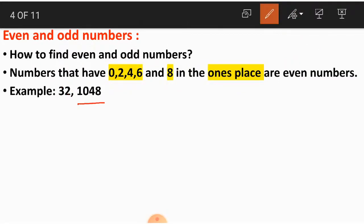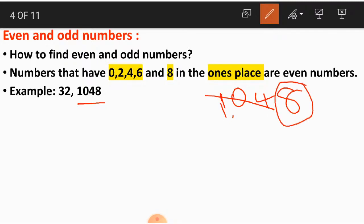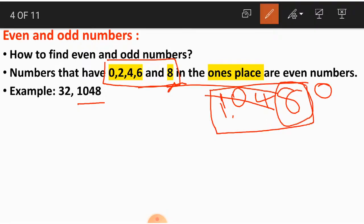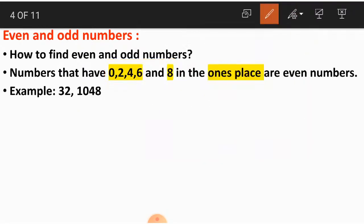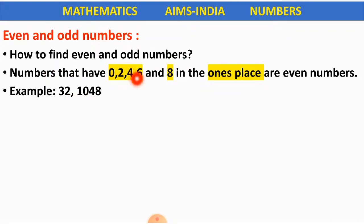In the next number 1048 — again, this is a very big number. We do not need these first three digits. What we are concerned about is only the last digit which is in the ones place. This digit, which is 8, is one among the given numbers 0, 2, 4, 6, 8. Yes or no, children? So this whole number 1048 becomes an even number. Numbers that have 0, 2, 4, 6 and 8 in the ones place are even numbers.